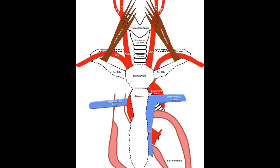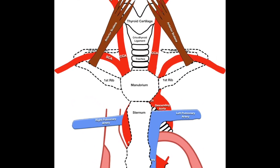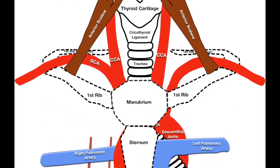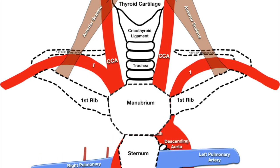The subclavian artery can be divided into three parts based on its relationship with the anterior scalene: the first part from its origin to the medial border of the anterior scalene, the second part passing behind the muscle and the third part from the lateral border of the anterior scalene to the lateral border of the first rib, beyond which it continues as the axillary artery.